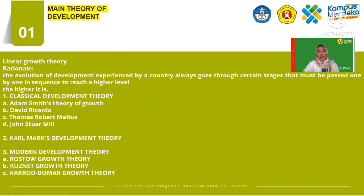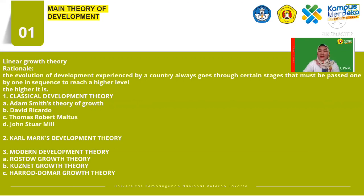For the linear growth theory and the rational theory, the evolution of the development experienced by a country always goes through certain stages that must be paced one by one in sequence to reach a higher level. The example theorists of classical development theory come from Adam Smith, David Ricardo, Thomas Robert Malthus, and John Stuart Mill.